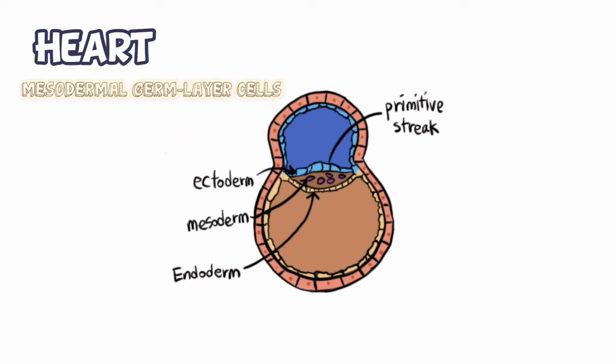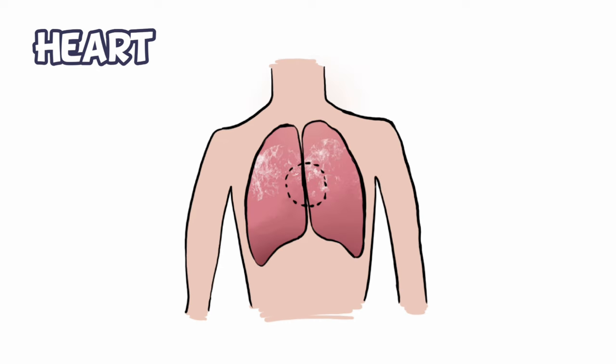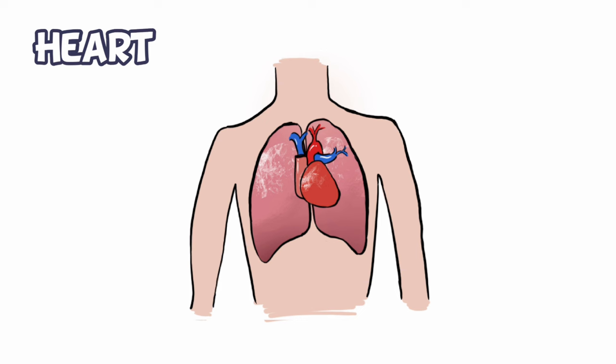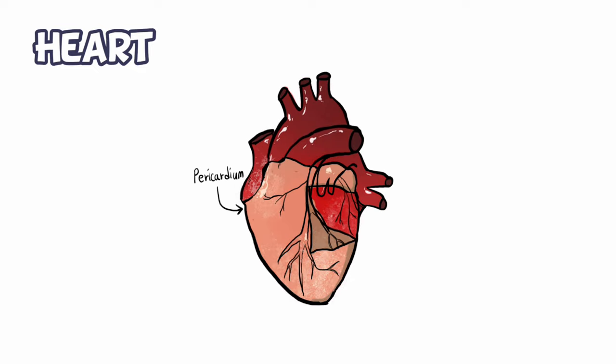The heart is a mesodermally-derived organ, i.e., it originates from embryonic mesodermal germ layer cells. The mesoderm is the source of bone, muscle, connective tissue, and dermis. It is situated in the thoracic cavity, in between the two lungs, slightly tilted to the left, the size of a clenched fist — no bigger, but absolutely vital. The heart is protected by a double-walled membranous bag called the pericardium, which also covers the roots of your major blood vessels as they extend from your heart.